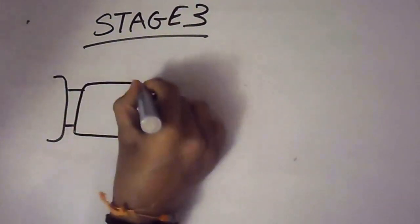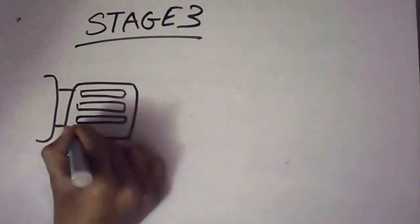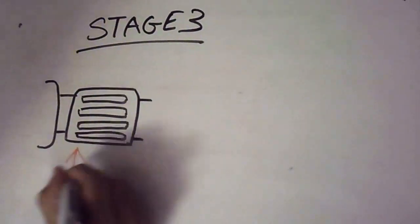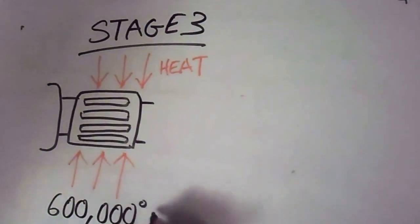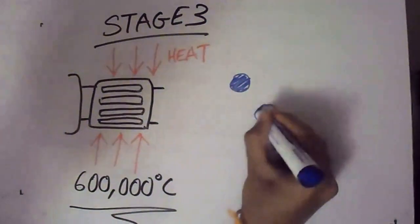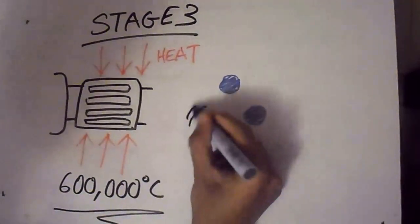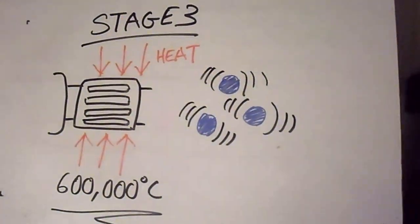Next, the ICH coupler, or Ion Cyclotron Heating Coupler, heats the plasma up to around 1 million degrees Kelvin, roughly 600,000 degrees Celsius. This further excites the ions, which means they vibrate faster and faster.